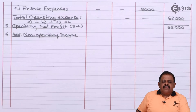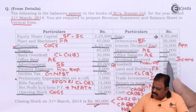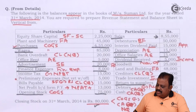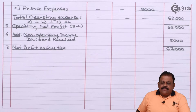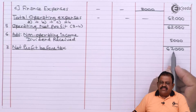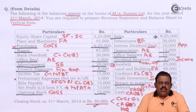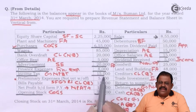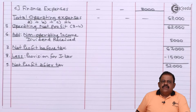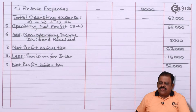Operating expenses of 63,000 are deducted from gross profit to arrive at operating net profit of 62,000. To this we add non-operating income: dividend received 5,000. There are no non-operating expenses or losses in this question. So net profit before tax is 67,000. Provision for income tax is 15,000, giving net profit after tax of 52,000.